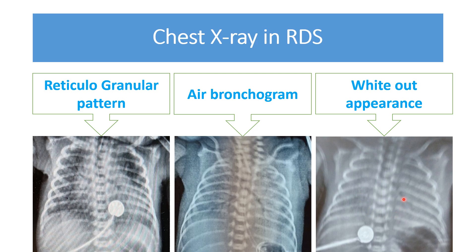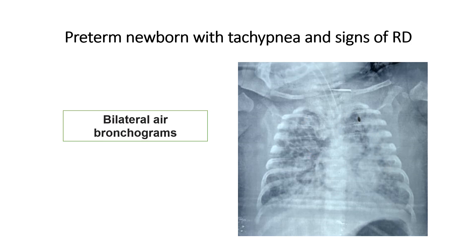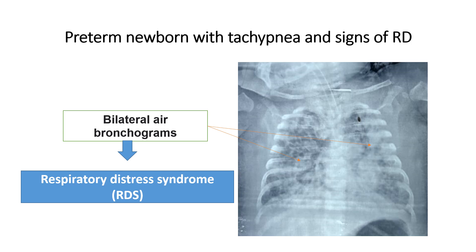Complete white-out appearance on x-ray — where you are not able to differentiate the heart border from the lung — suggests the patient is having severe RDS. Clinically, by the Silverman Anderson score, we differentiate mild, moderate, or severe RDS, and according to the radiological findings also we differentiate mild, moderate, and severe RDS. In this next x-ray of a preterm newborn with signs and symptoms of respiratory distress, bilateral central air bronchogram is present, so we label it as moderate respiratory distress syndrome.